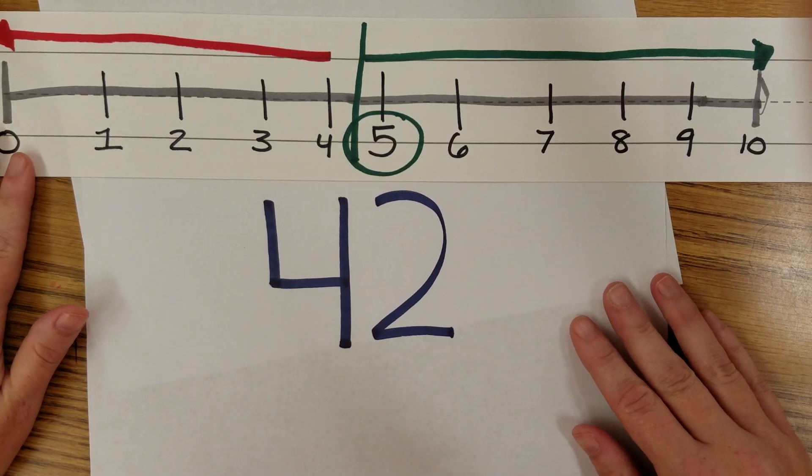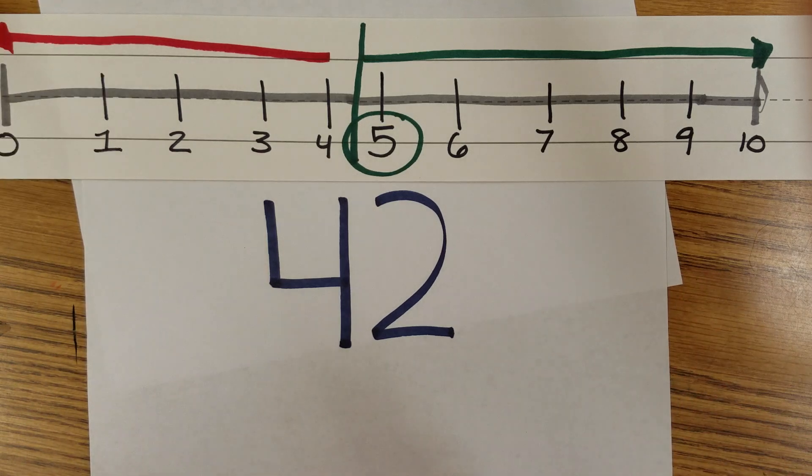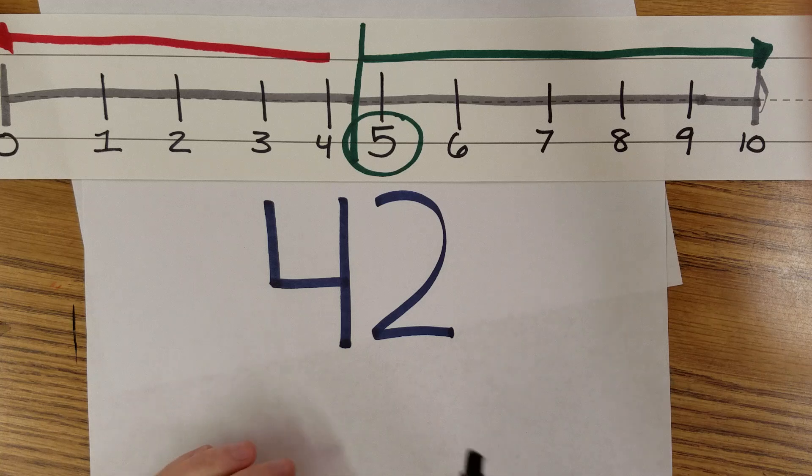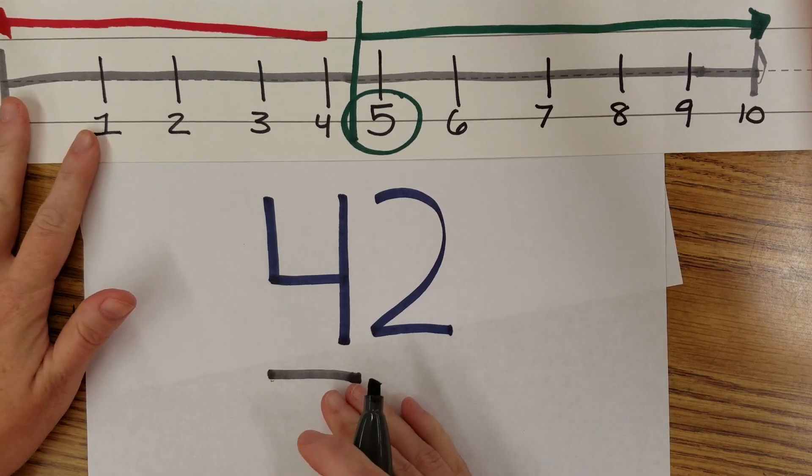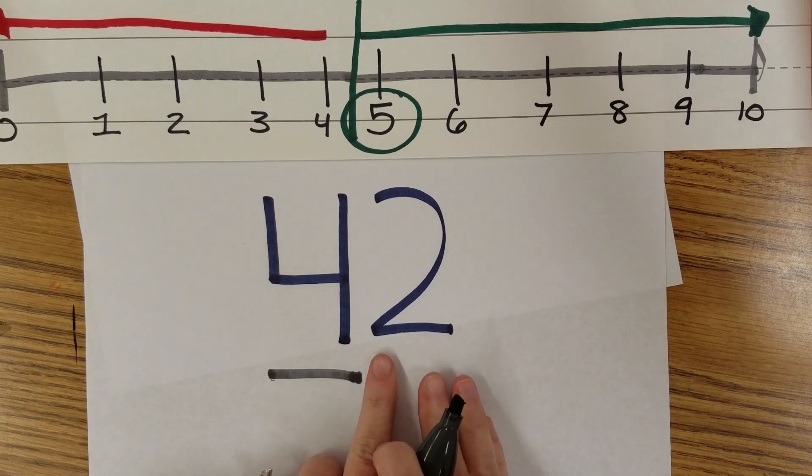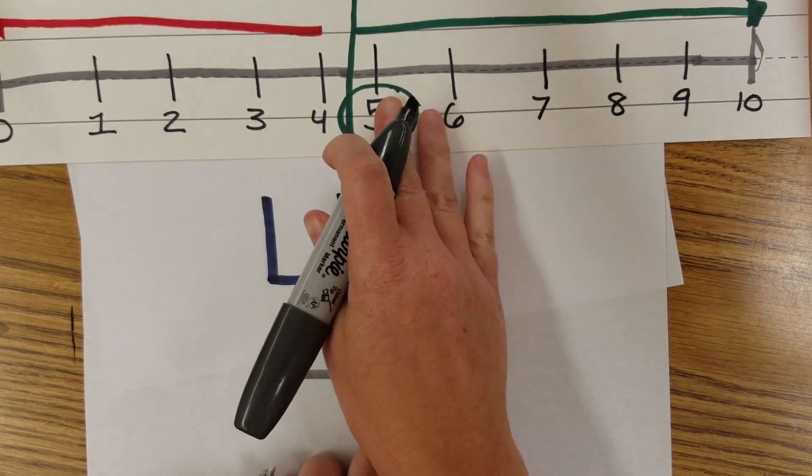Okay, our number here is 42. So the first thing we need to do is figure out which number is in the tens place value. For this one, the four is in the tens place value. That means that the two, which is in the ones place value, is the boss.